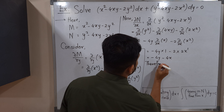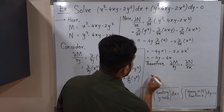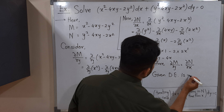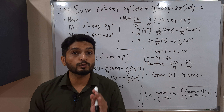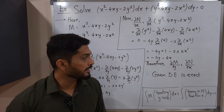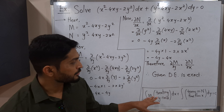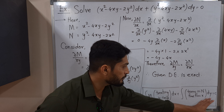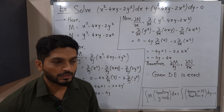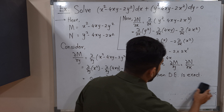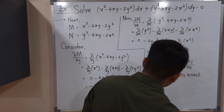Therefore ∂M/∂y = ∂N/∂x, so the given differential equation is exact. When solving an exact differential equation, first prove both partial derivatives are equal, then apply the solution formula. We have proved it is exact. Now we need to evaluate the two integrations in the formula separately, sum them, and set equal to c.